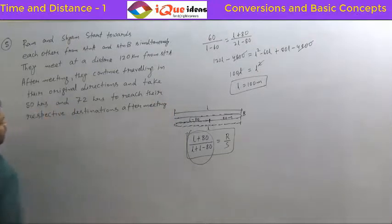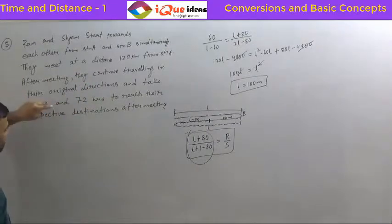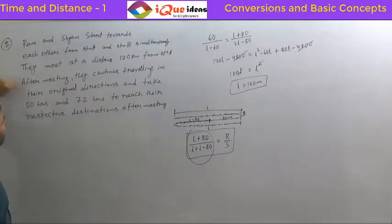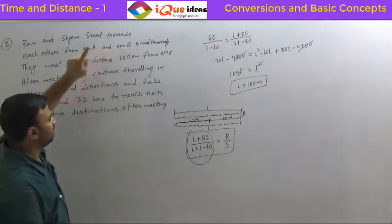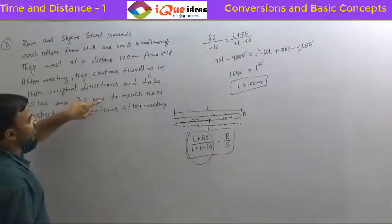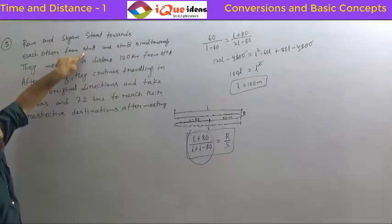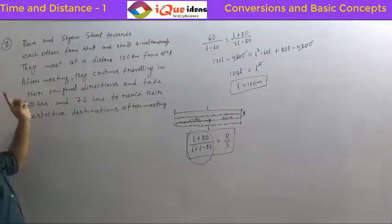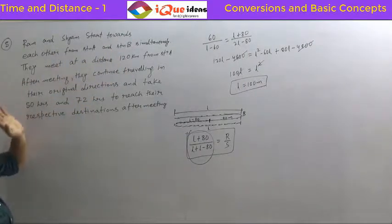Even after meeting they continue their motion. The 50 hours is the time taken by Ram after meeting to reach his destination, which is station B since Ram started from station A. Similarly, Shyam has taken 72 hours after meeting to reach his destination, which is station A since Shyam started from station B.